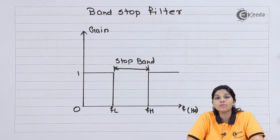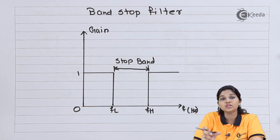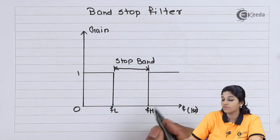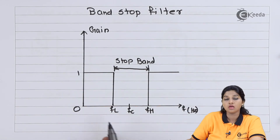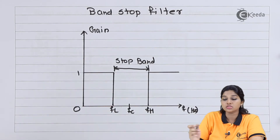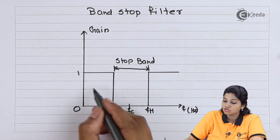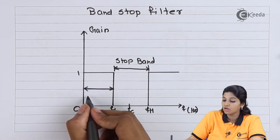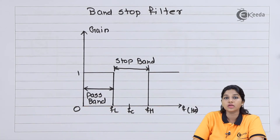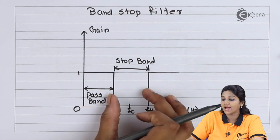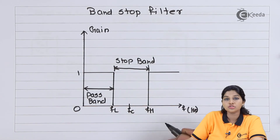In case of the band pass filter, a particular band of frequency is passed by the filter. Here also, we need to consider two frequencies, fh and fl. Fc is the center frequency which is always present between fh and fl. In this case, initially the gain of the filter is equal to 1. At f equal to fl, the gain makes a sudden transition from 1 to 0. So from f equal to 0 to fl, we have the pass band. Between fl and fh, the gain becomes 0, and that band of frequency is called the stop band. Again, the gain makes a sudden transition from 0 to 1 at f equal to fh.